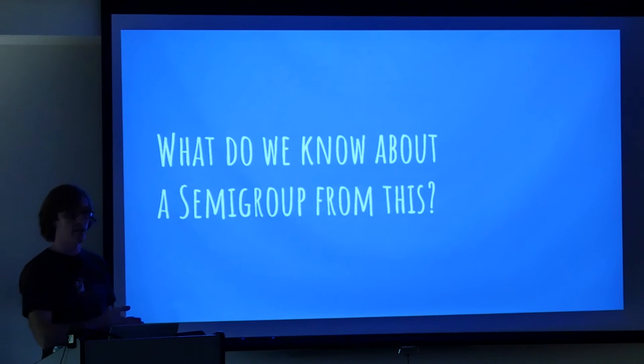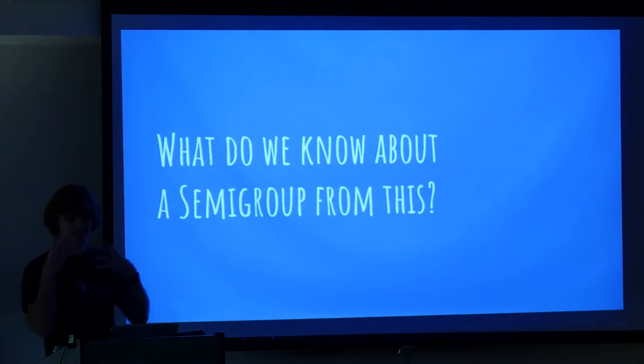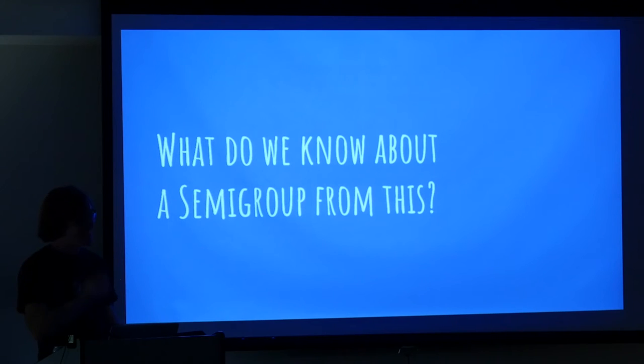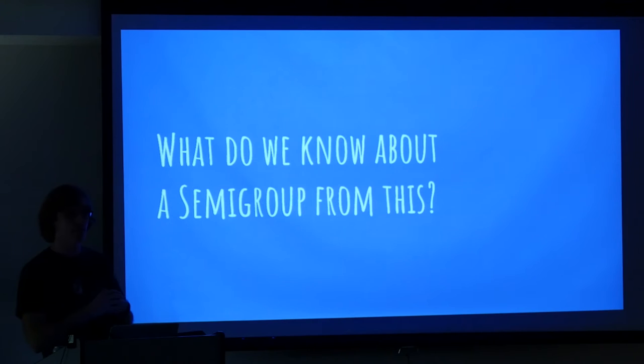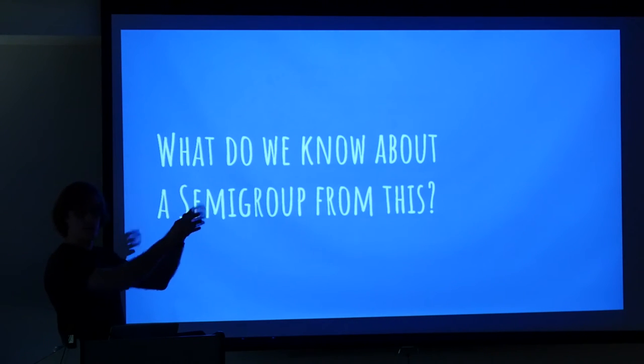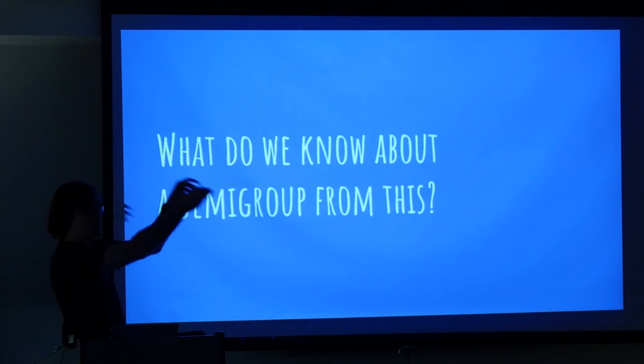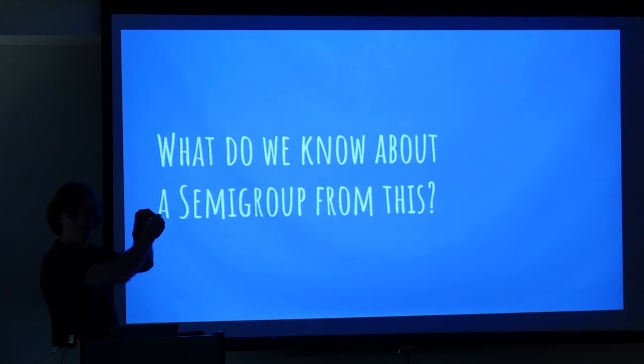So what do we know about a semigroup then? Knowing that it has this append operation and that append operation has to be associative. What does that tell us? It doesn't seem like that's much, right? Got an append operation, it's associative. That's all we know. But there's actually more that we can know about it, like its capabilities. So you have an arbitrary thing, you know it's a semigroup. You know that certain kinds of things are safe to do.